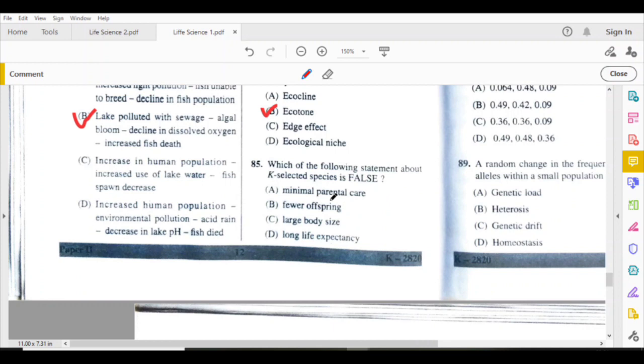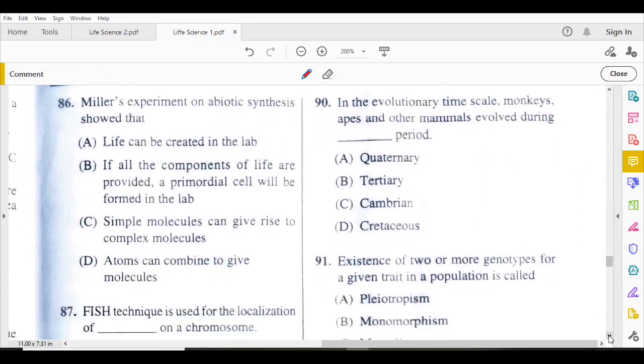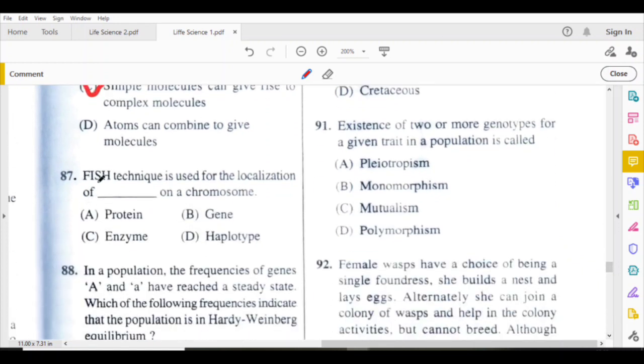Which of the following statement about K-selected species is false? Minimal parental care. Miller's experiment on abiotic synthesis showed that small molecules can give rise to complex molecules. Fluorescent in-situ hybridization technique is used for the localization of genes on a chromosome.